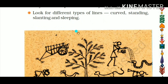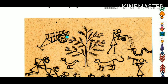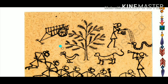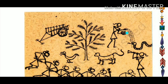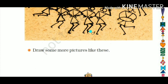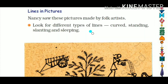Now look at these pictures made by folk artists. Look for the different types of lines — curved, standing, slanting, and sleeping. These are the four types of lines we learned in the first video. You have to find and mark where the standing lines, slanting lines, curved lines, and sleeping lines are in the folk art pictures.